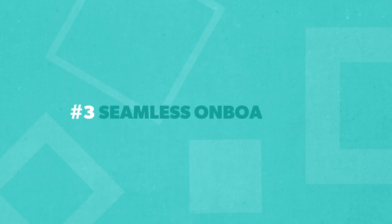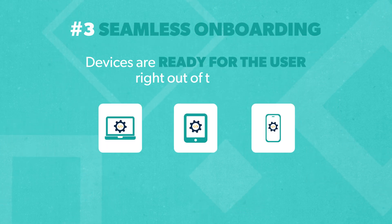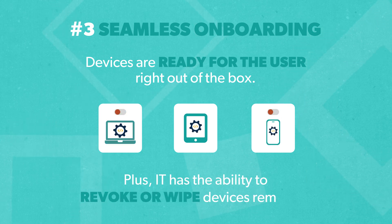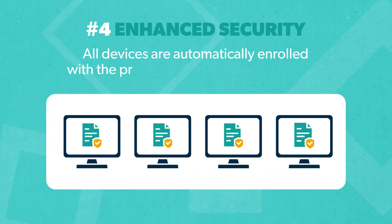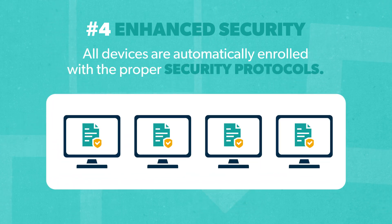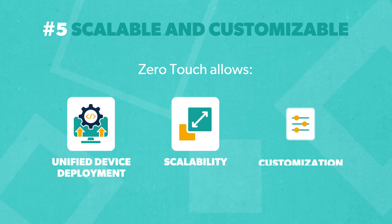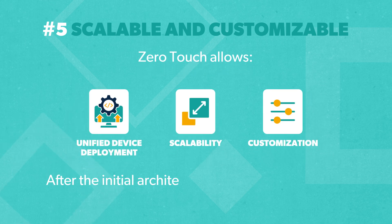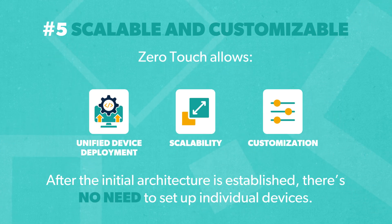Zero-touch configurations are standardized and centralized, reducing human error and the number of IT support tickets. It also makes onboarding seamless — laptops, tablets, and mobile devices are ready for the user right out of the box. Plus, IT has the ability to revoke or wipe devices remotely. Security is enhanced because all devices are automatically enrolled with the proper security protocols. Zero-touch allows for unified device deployment that's scalable and customizable for different teams. After the initial architecture is established, there's no need for IT staff to set up individual devices.